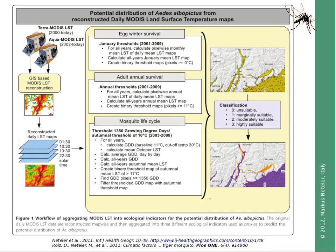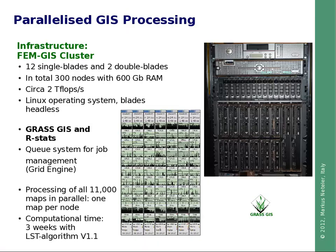From these temperature-based indicators, we derive a classification which is then turned into a potential distribution map. To perform this processing, the cluster of the Edmund Mach Foundation GIS unit has been used. It is not necessary to have a cluster — you can also use desktop PCs, it will just take longer. We plan to publish our reconstructed data in the near future, so there will be no need to reprocess it. Everything is based on open source GIS, the R statistical language, and a grid engine used for queue management.